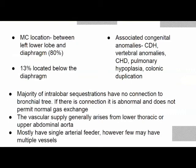The most common location is between the left lower lobe and diaphragm in about 80% of cases; 13% are located below the diaphragm. Sequestrations are associated with other congenital anomalies like CDH, vertebral anomalies, congenital heart disease, pulmonary hypoplasia, and colonic duplication. Most intralobar sequestrations have no bronchial communication, but even if present, it is abnormal and does not allow gas exchange — however, bacteria can enter and cause infection. They often present as pneumonia or empyema; some cases are referred after failed decortication with a residual mass requiring resection.